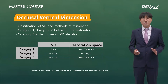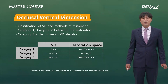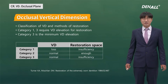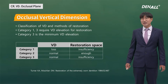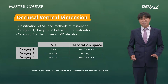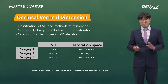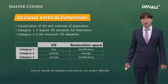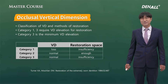You just need to understand this classification table — this is the take-home message. Please review this after the lecture. Classification of VD and Methods of Restoration: when restoration space is insufficient, as in Category 1 or 3, VD increase is necessary for restoration even when there is no VD loss. But if there is insufficient restoration space in Category 3, VD increase is necessary. It is best to minimize the increase.